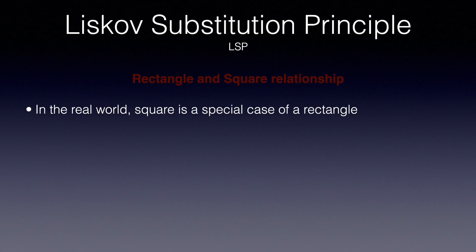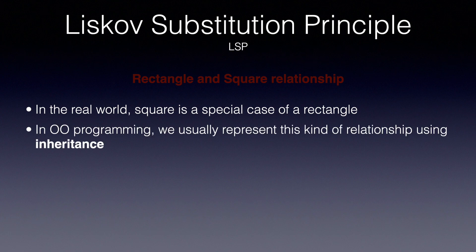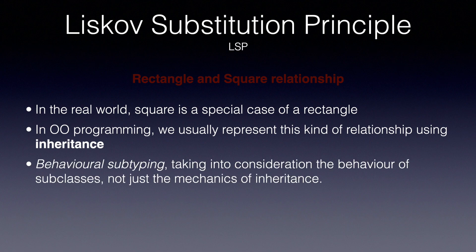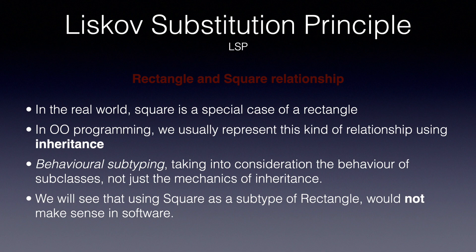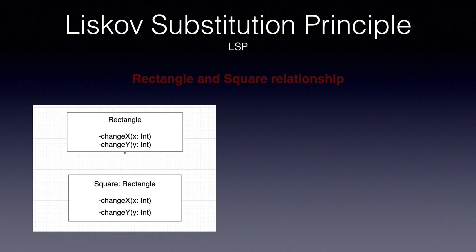A square is what we say a special case of a rectangle. In object-oriented programming, we specify usually this type of relationship using inheritance, subclassing a type essentially. Liskov's substitution principle tells us about behavioral subclassing, which means that we take the behavior of a subclass into consideration, not just the mechanics of inheritance. For example, just because you can technically inherit and override methods of a class does not mean that this subclass would work when replacing its parent. We will see now how inheriting from rectangle when declaring a square would make no sense in software. This would be a simple UML diagram of the relationship of those two types. We use arrows to indicate dependencies, and in this case, the square depends on the rectangle since it inherits from it.